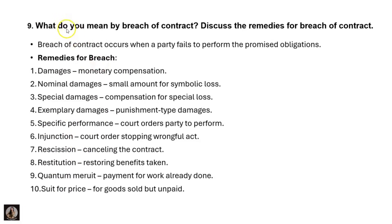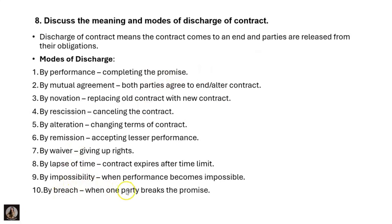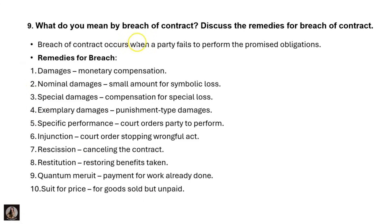The next question: what do you mean by breach of contract? Discuss the remedies for breach of contract. Breach of contract occurs when one party fails to perform the promised obligations. Remedies include damages — monetary compensation — nominal damages meaning a small amount for symbolic loss, and special damages meaning compensation for a specific loss.